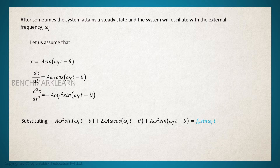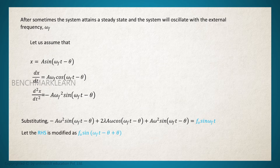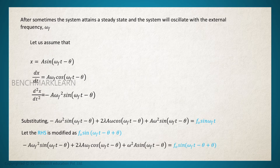Substituting into the equation, it becomes: minus a omega_f² sin(omega_f t minus theta) plus 2 lambda a omega_f cos(omega_f t minus theta) plus omega² a sin(omega_f t minus theta) equals f₀ sin(omega_f t). The right-hand side is modified as f₀ sin((omega_f t minus theta) plus theta).